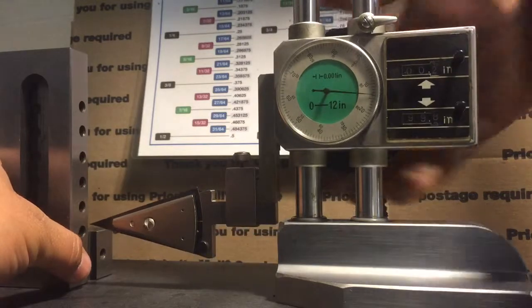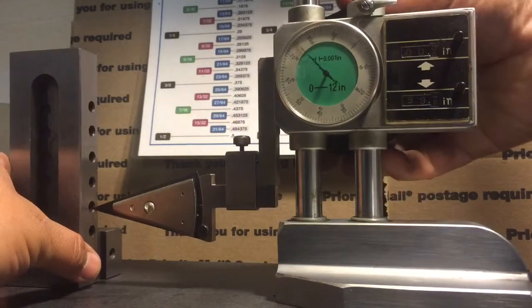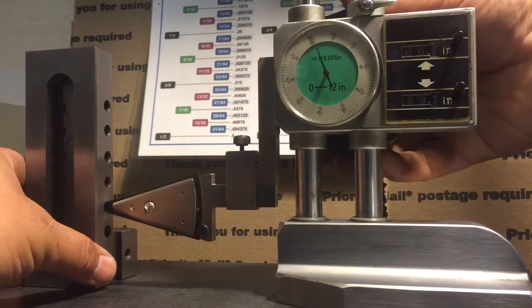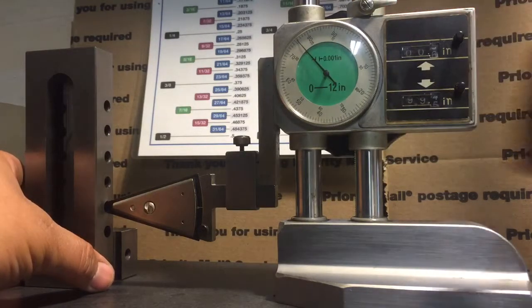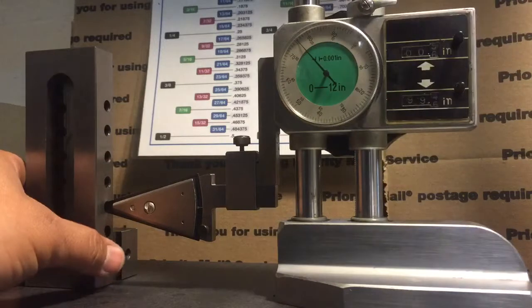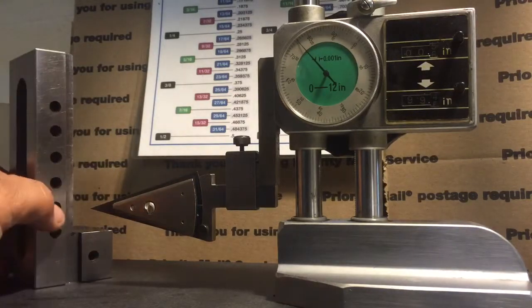Move up to your next hole. There you go, 575 thousandths is the distance between these two holes.